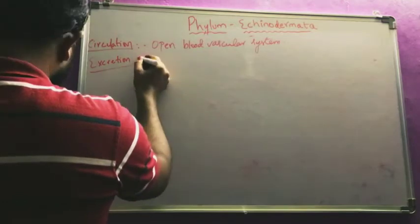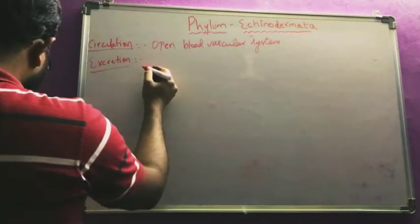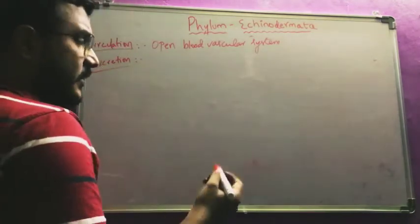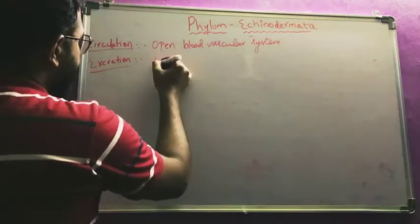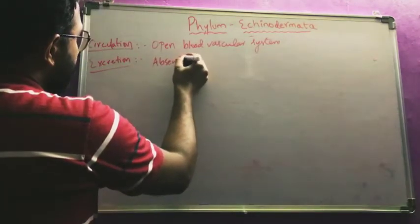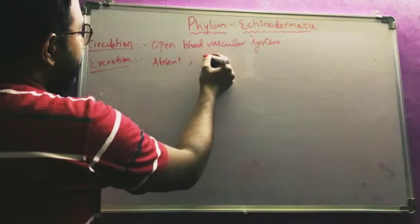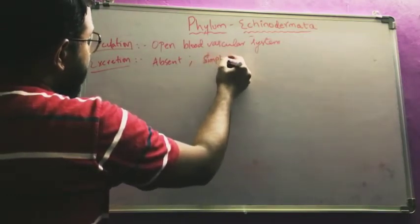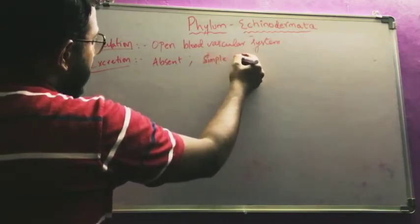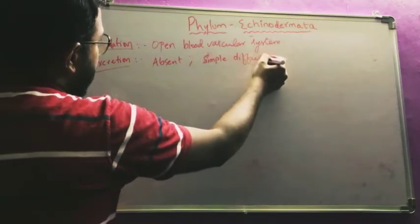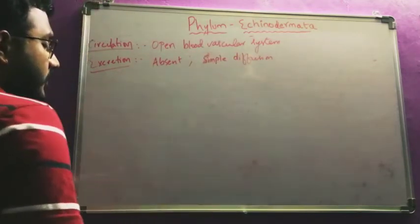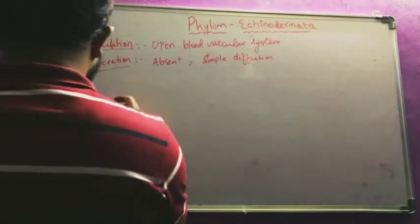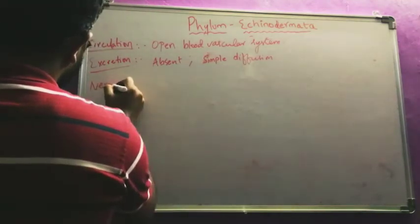The excretory system is absent in Echinodermata. Excretion is done through simple diffusion — because excretory organs are not present, waste materials go out through the process of simple diffusion.